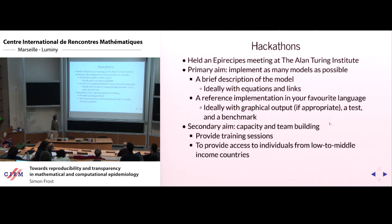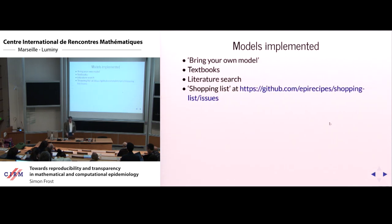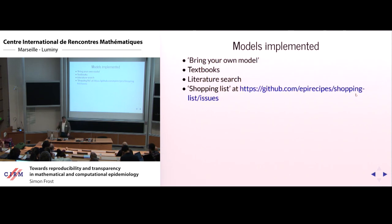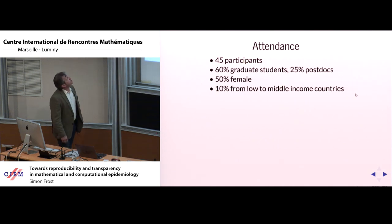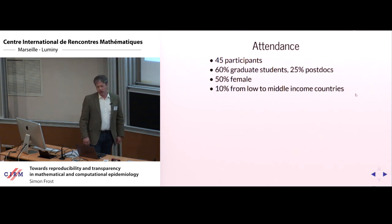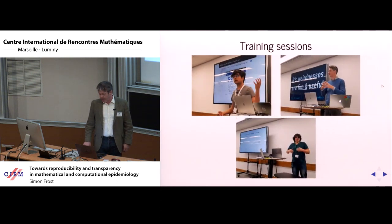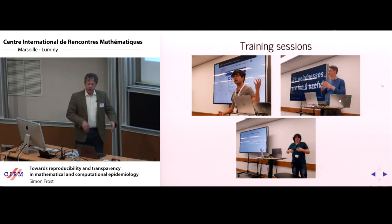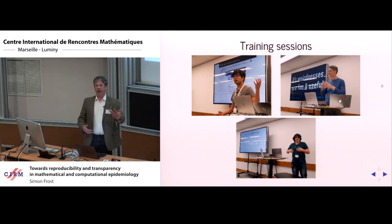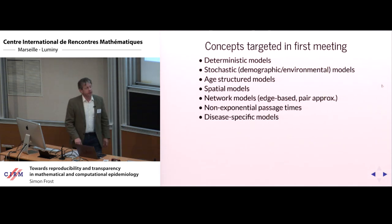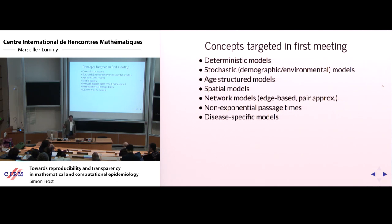We held a hackathon at the Alan Turing Institute. The idea was to build up a collection of different models, provide training, and open it up to people especially from low-to-middle-income countries. Some participants brought their own models to put into the platform; others implemented models from textbooks; others did a literature search. We had 45 participants — 60% graduate students, 50% female, and 10% from low-to-middle-income countries — a nice diversity. We also had training sessions to springboard people trying new things, targeting a range of model types: deterministic, stochastic, age-structured, spatial, etc.